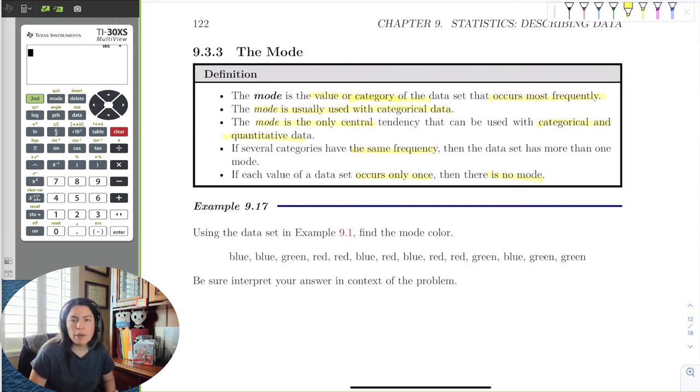So it's either absence of mode, or the ones that have the most, or if one category has the same, it has the most, then there is more than one mode.